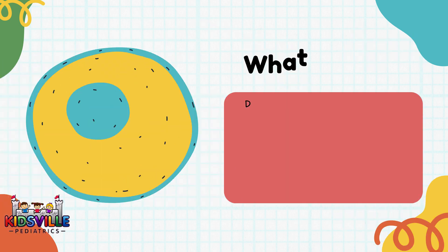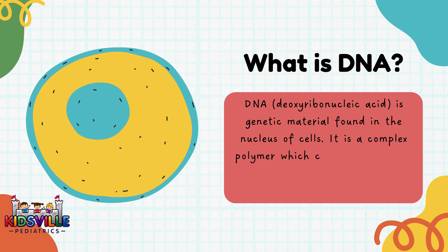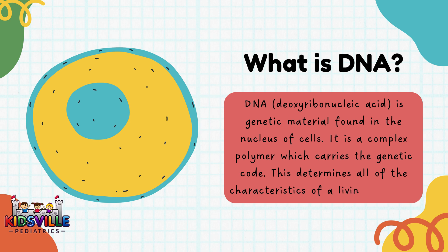DNA, or deoxyribonucleic acid, is genetic material found in the nucleus of cells. It is a complex polymer which carries the genetic code. This determines all of the characteristics of a living organism.